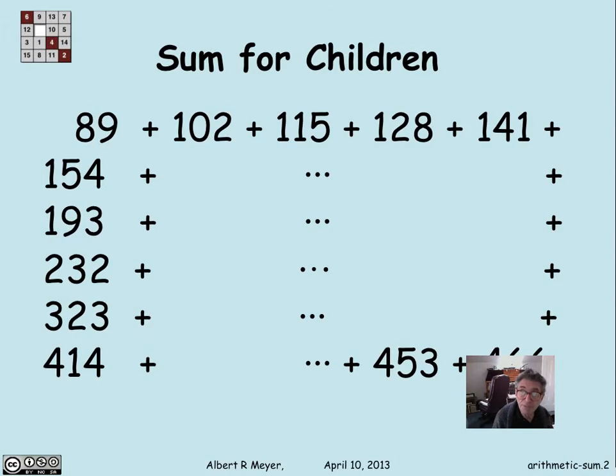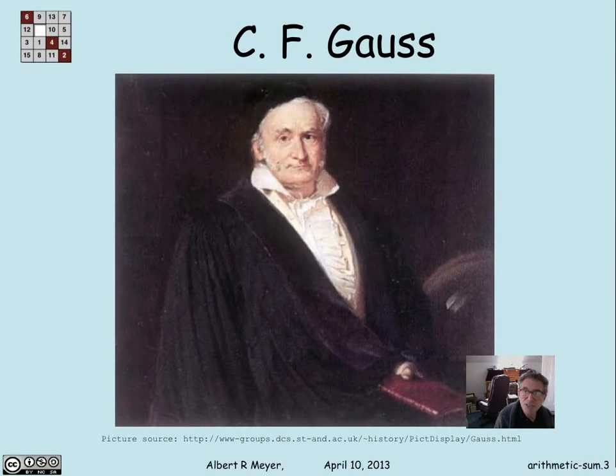So there's an example. This supposedly is the kind of problem that was assigned to children in the 18th century to keep them busy in class. And the great mathematician Gauss, Carl Friedrich Gauss, whom you know from magnetism and from probability theory, but also the inventor of congruence and the number theory that we've studied, showed his brilliance as a child prodigy.